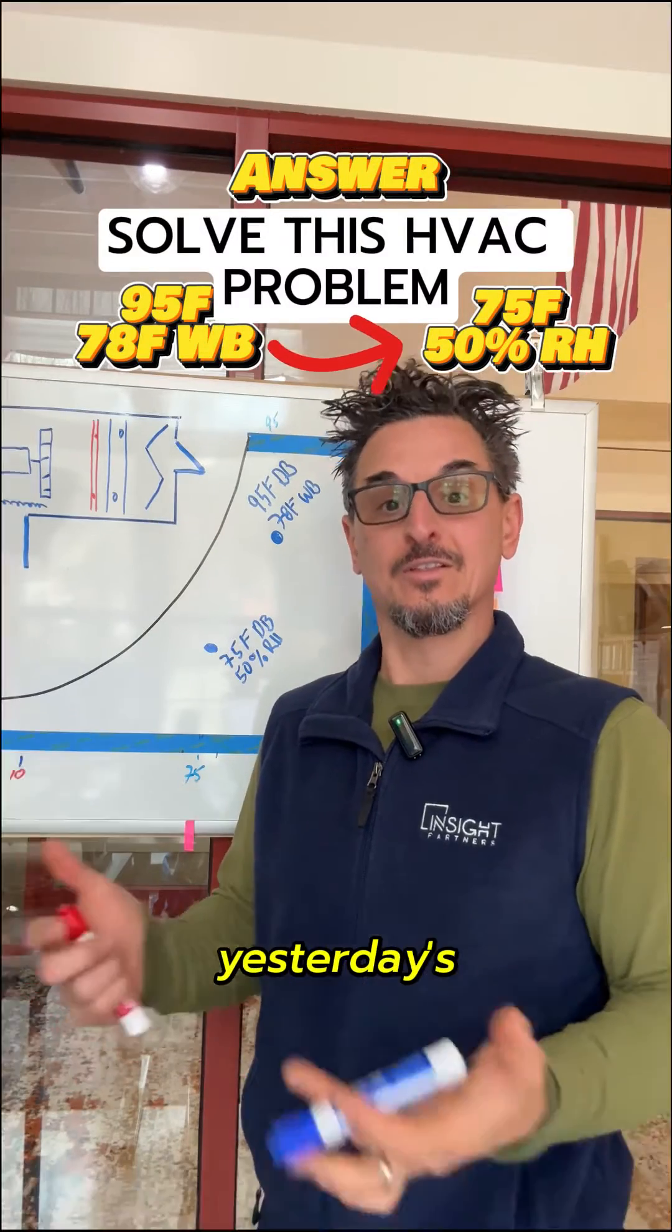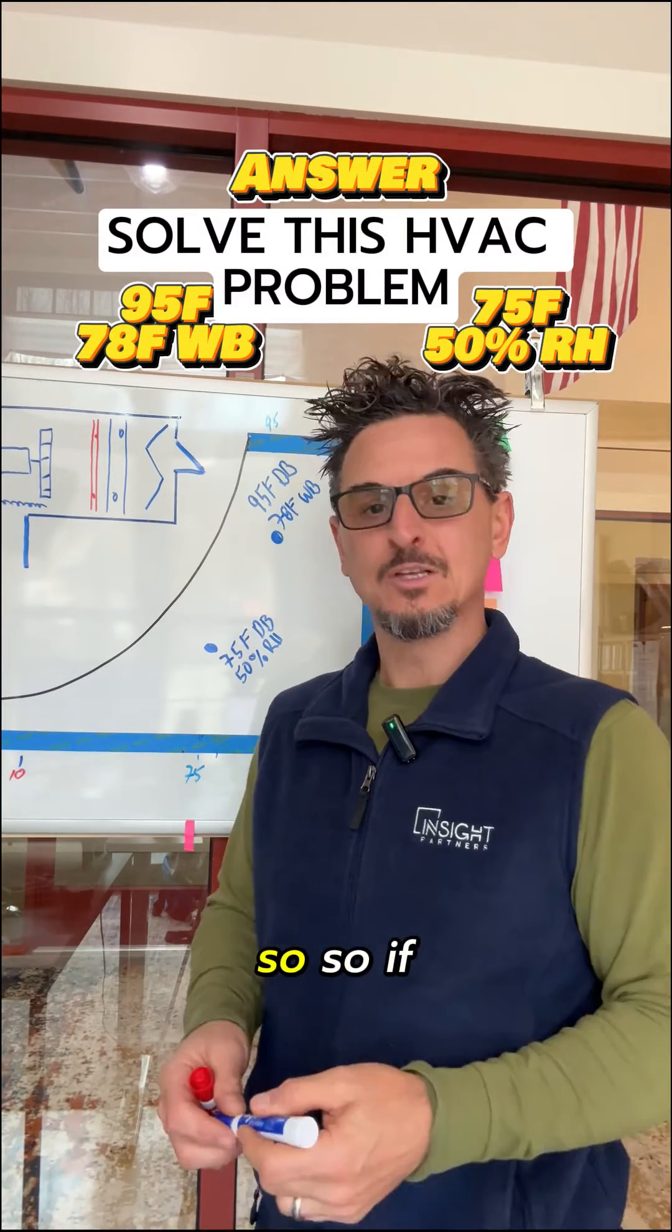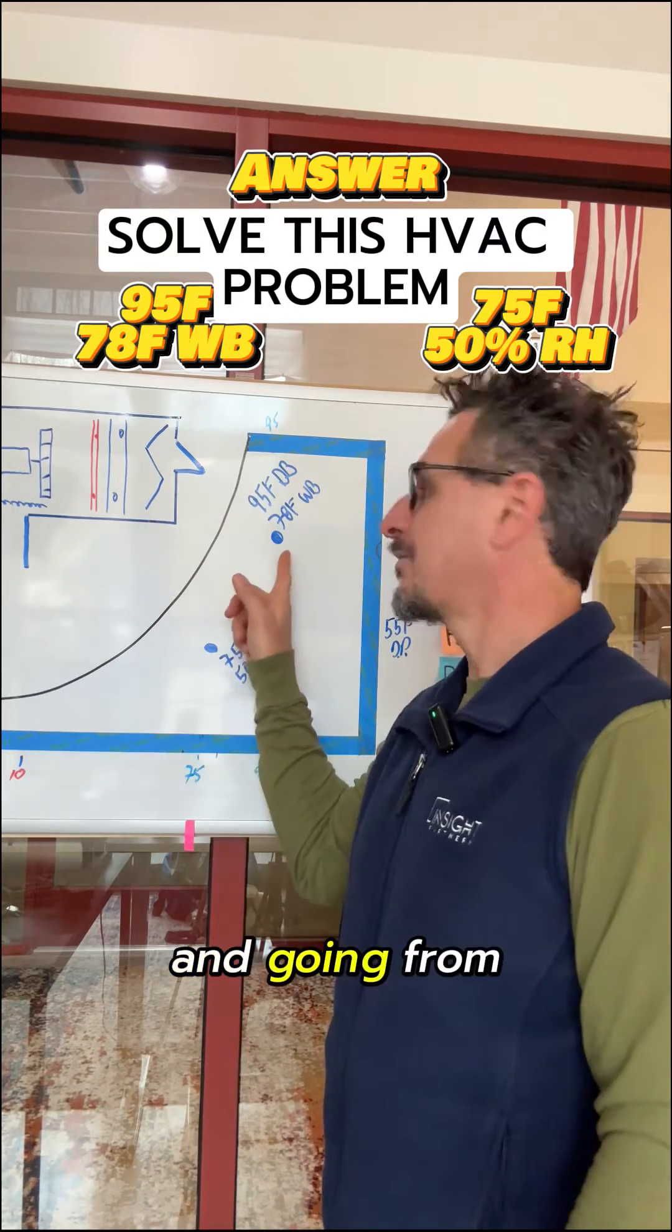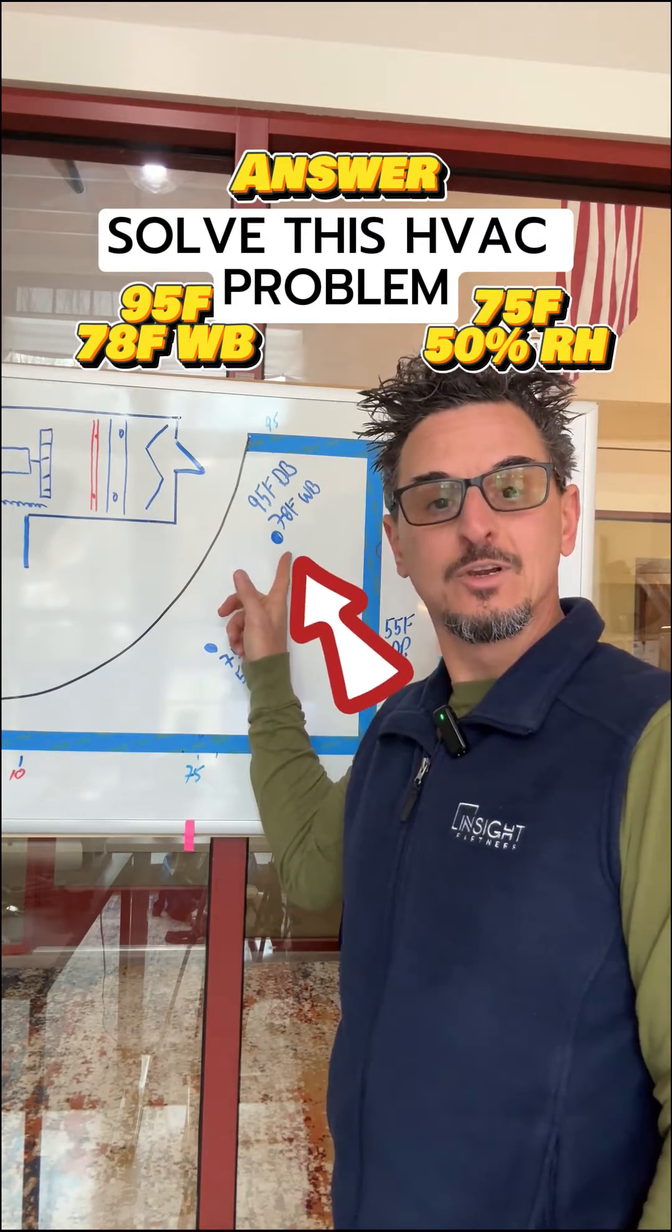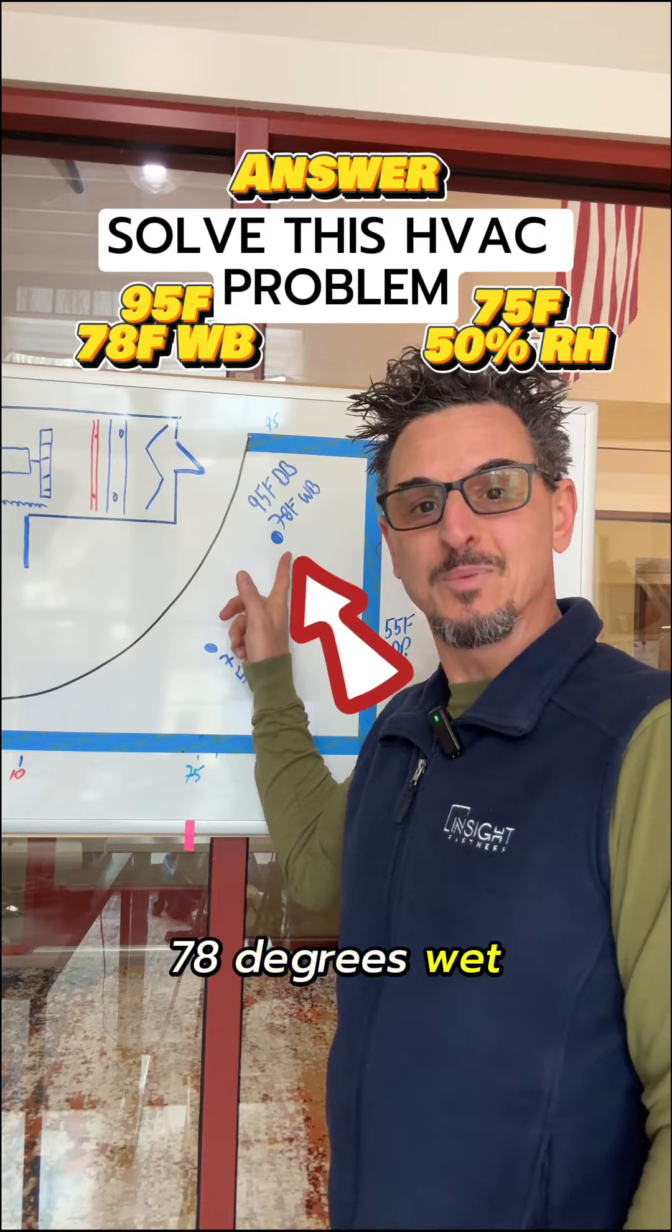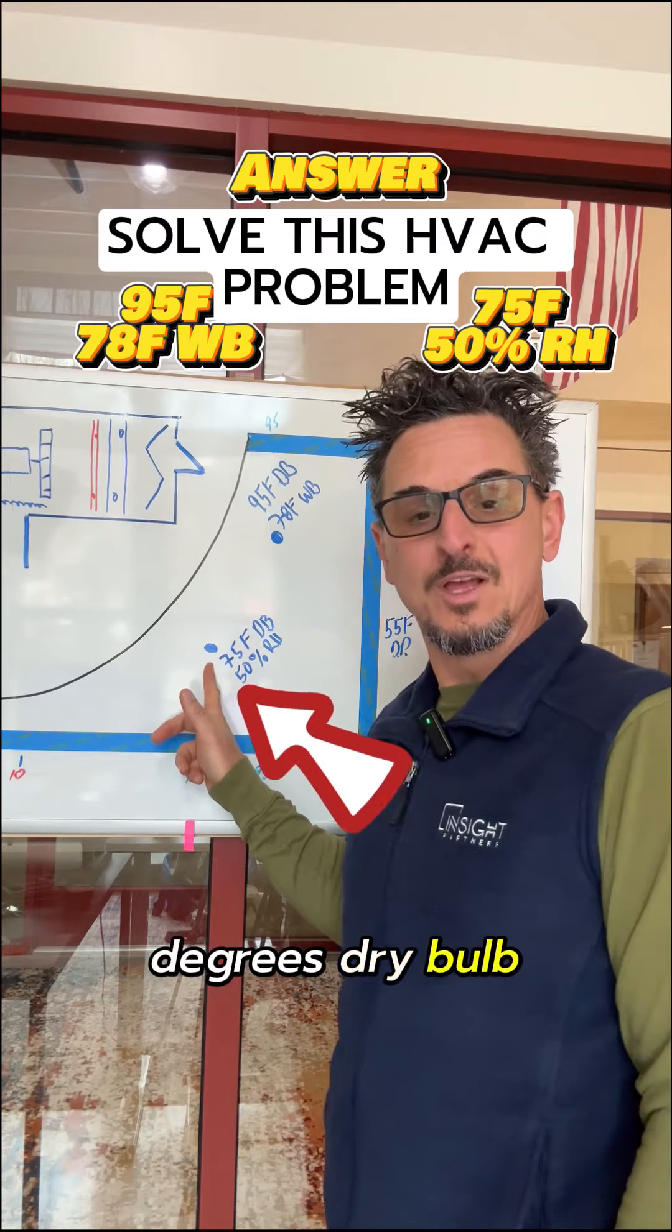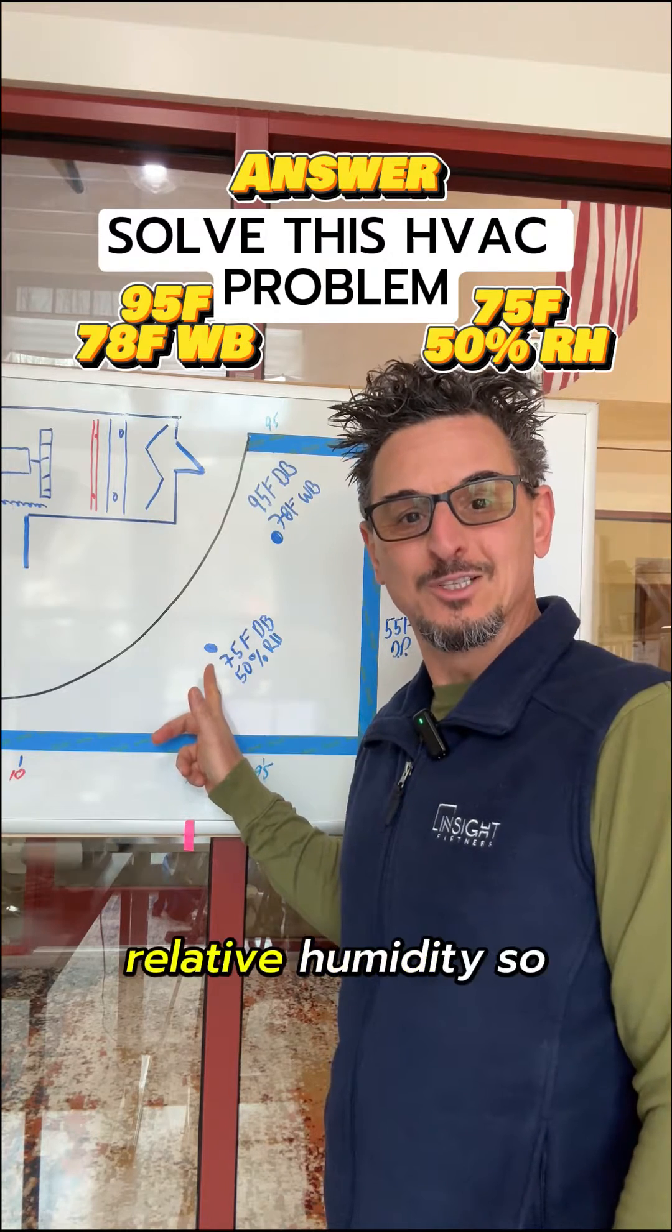So did you figure out yesterday's HVAC problem? If you remember yesterday, we were talking about a makeup air unit going from 95 degrees dry bulb, 78 degrees wet bulb down to 75 degrees dry bulb and 50% relative humidity.